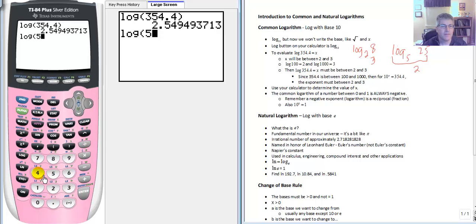Log of 54. Well, it's going to be somewhere between 1 and 2, isn't it? Because it's between 10 and 100. Or 10 to the first and 10 squared.